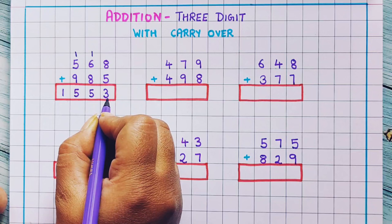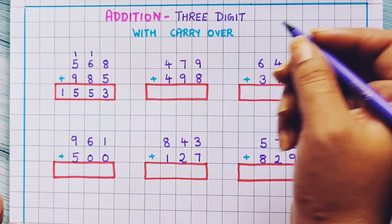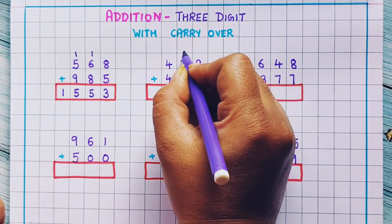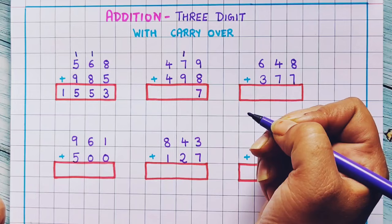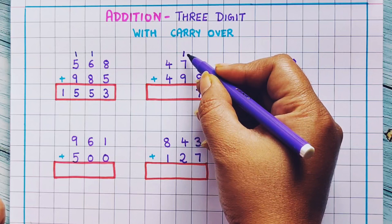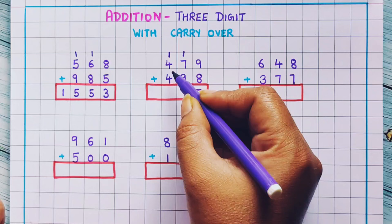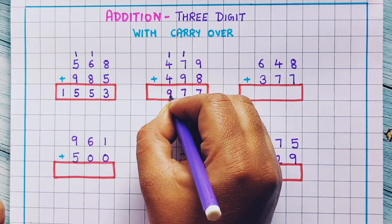I hope it is clear to you. Let's do more problems so that you can understand it clearly. 479 plus 498. Now 9 plus 8 is 17, so 1 I will write here as carryover and 7 I will write here. Now 1 plus 7 plus 9: 9 plus 1 is 10, and plus 7 is 17, so again I will put 1 here and 7 here. Now 1 plus 4 plus 4: 4 plus 4 is 8, plus 1 is 9. So the answer is 977.